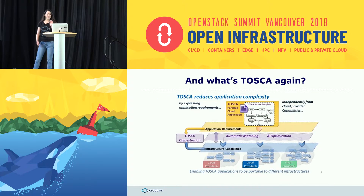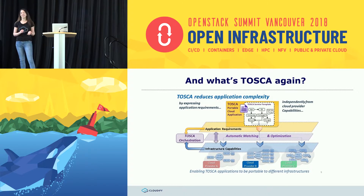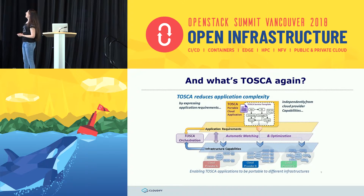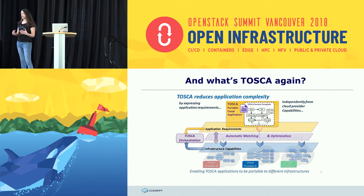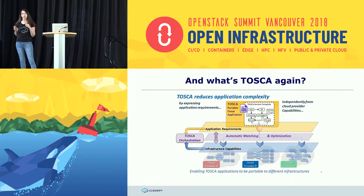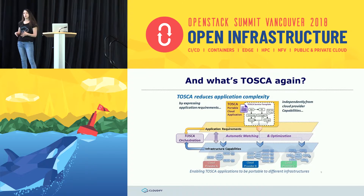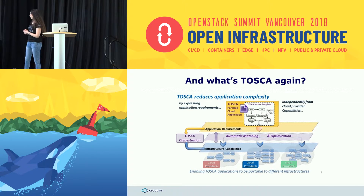So, Tosca was part of the title of the session. Tosca stands for Topology and Orchestration Specification for Cloud Applications. The idea is to reduce the application complexity and its modeling complexity by decoupling what the application is — the topology, the orchestration steps required to bring it up, manage it, and the entire lifecycle of that application — from the cloud provider capabilities and the actual environment on which it will run. Tosca is a DSL. It's model-driven and very declarative — you define what needs to be done, not how to do it. That is what enables this decoupling from the environment itself.